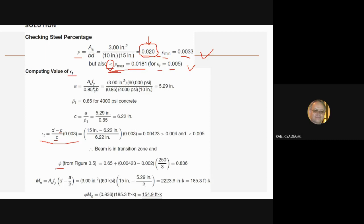Assuming ρ is less than ρ_max, we continue. For C, we need β₁ and A. For A, we use the formula for rectangular sections: AS × FY over 0.85 × F'c × B. We find A = 5.29 inches. For β₁, it is 0.85 because F'c is 4,000 psi.